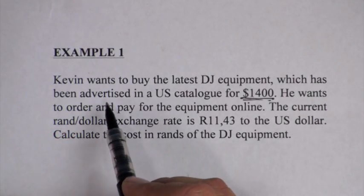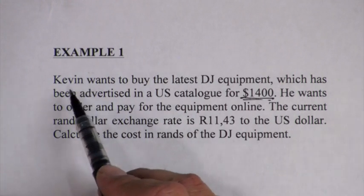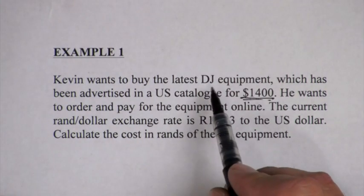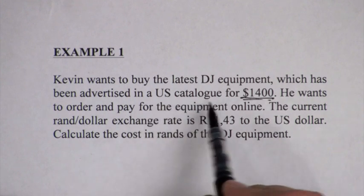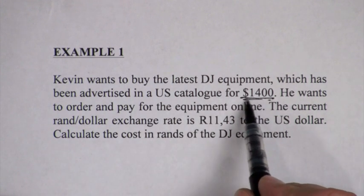In this problem we are going to discuss exchange rates. Kevin wants to buy the latest DJ equipment, which has been advertised in a US catalog for $1,400.